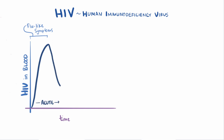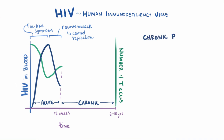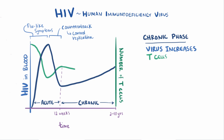In response, the immune system mounts a counterattack and starts to control virus replication. The amount of virus in the blood declines to lower but still detectable levels by 12 weeks, at which point the patient enters the chronic or clinically latent phase, which can last between 2 and 10 years. If we plot T cell counts alongside virus levels, they loosely mirror each other. After the initial acute decline and immune counterattack, even without clinical symptoms the virus steadily chips away at the immune system — T cells slowly decrease, losing about 1–2 billion T cells every day.